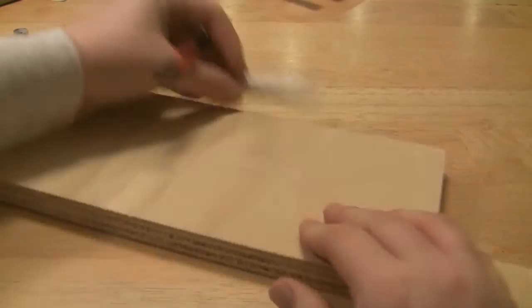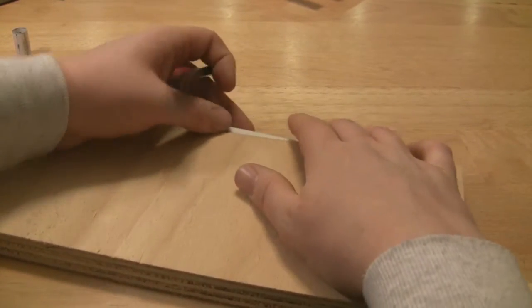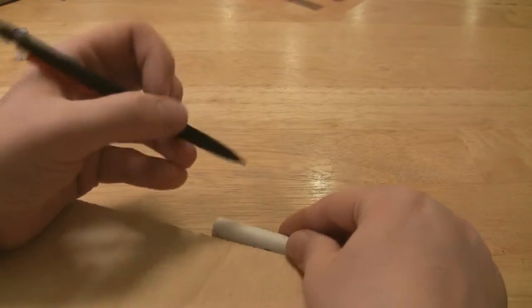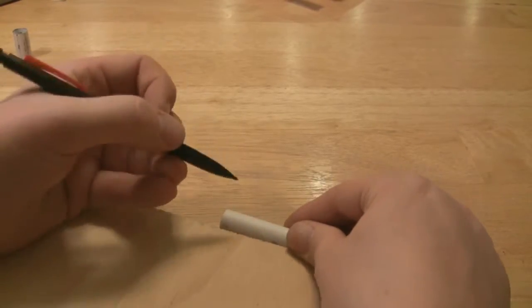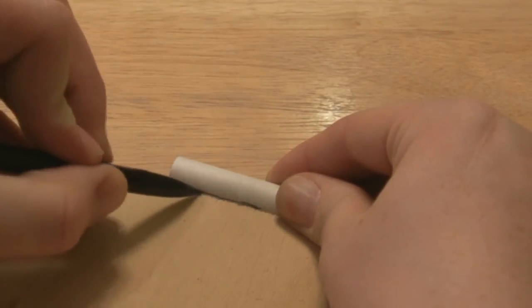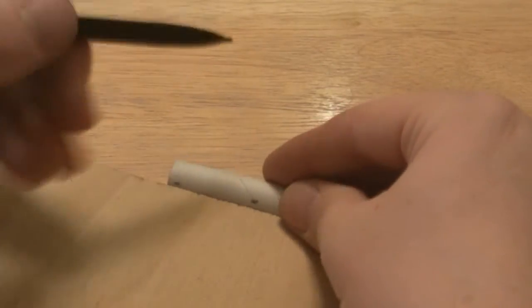Door jamb is typically what we use, but so I can do this on film just got this piece of plywood here. There we go.